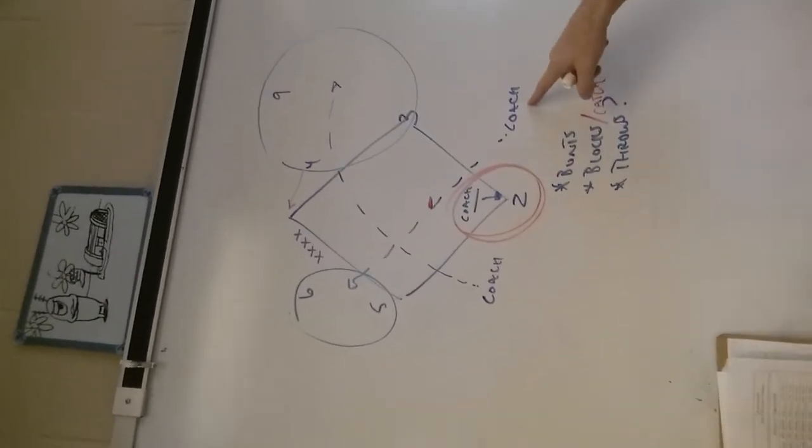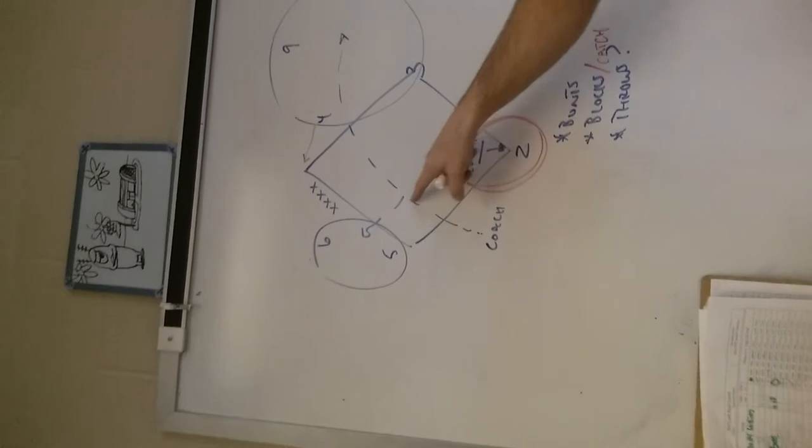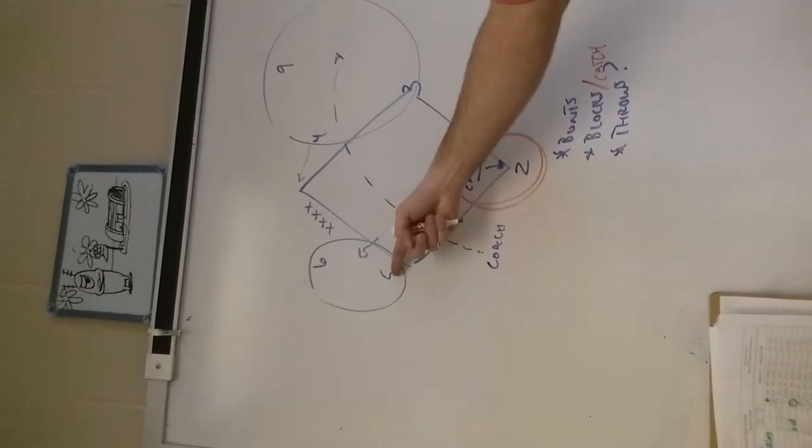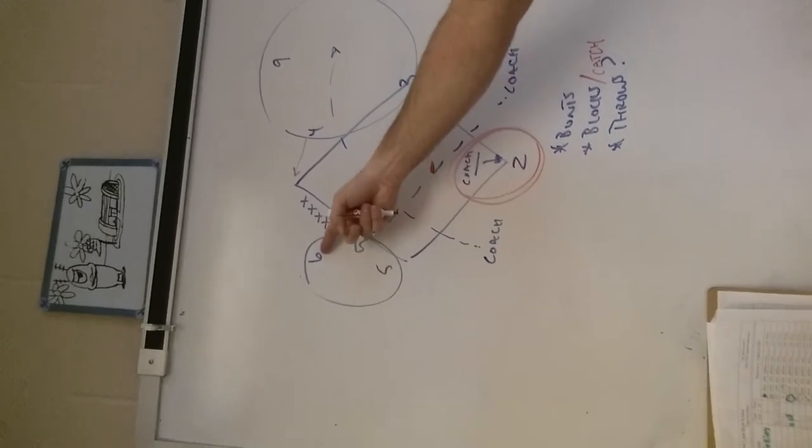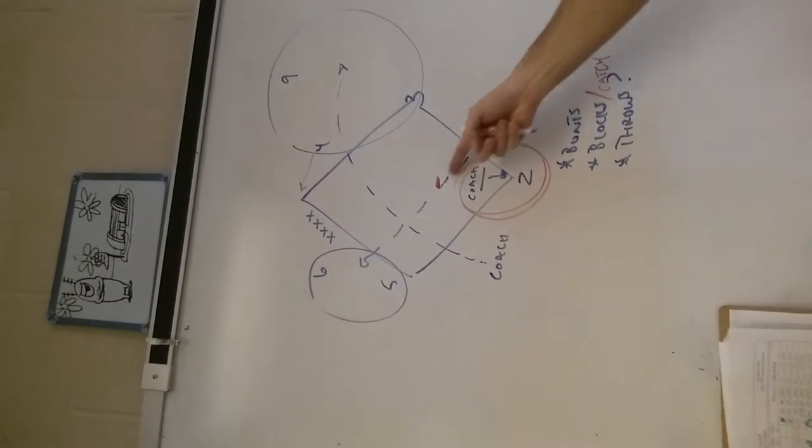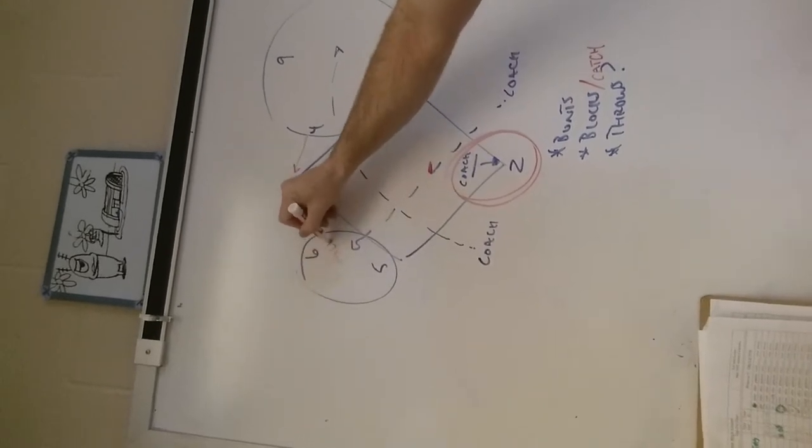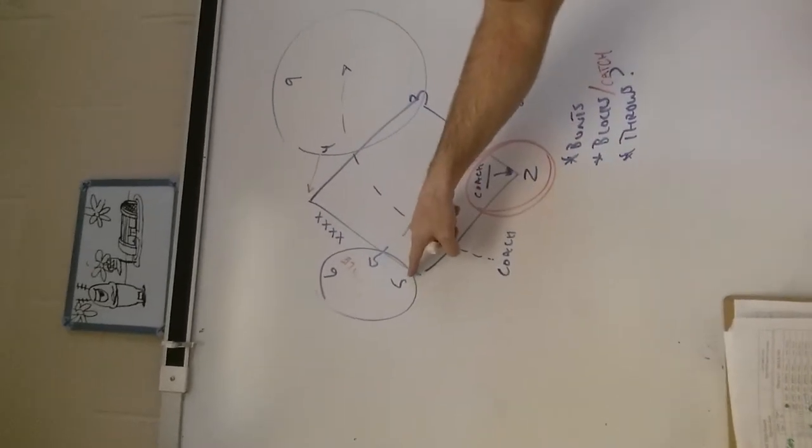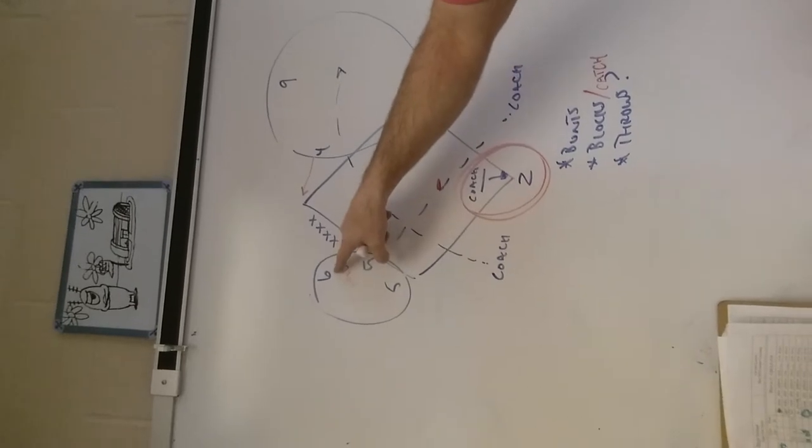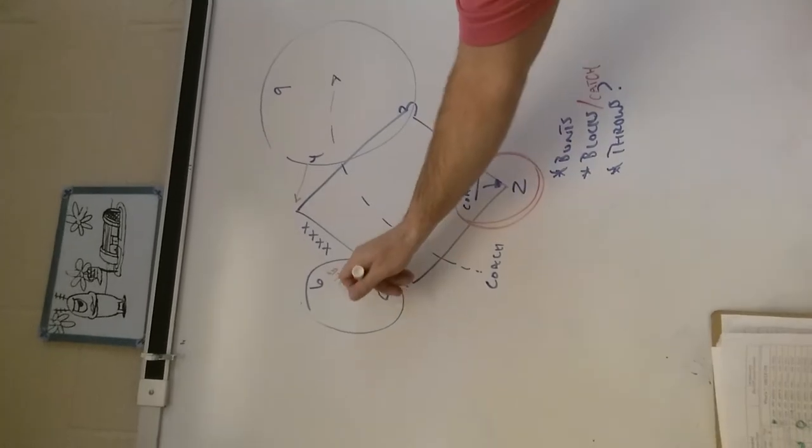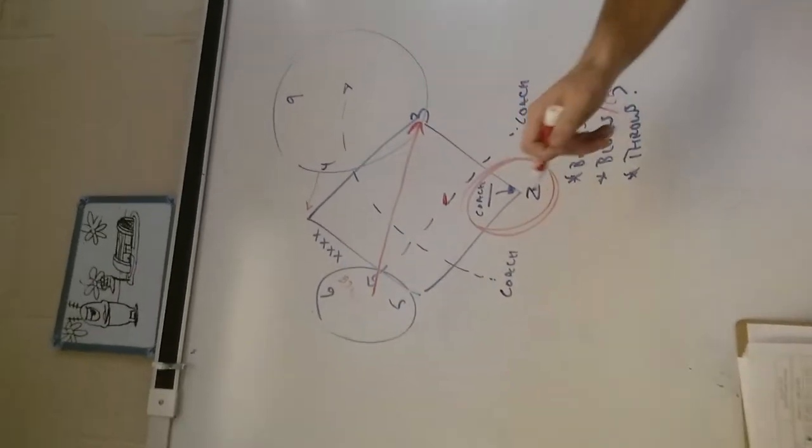There's a coach over here hitting ground balls behind this coach. He's hitting ground balls to the third baseman and the shortstop. He's hitting this ball, which we call the six hole. Maybe the third baseman cuts it off, maybe the shortstop backhands it. They're throwing that ball across to first base.